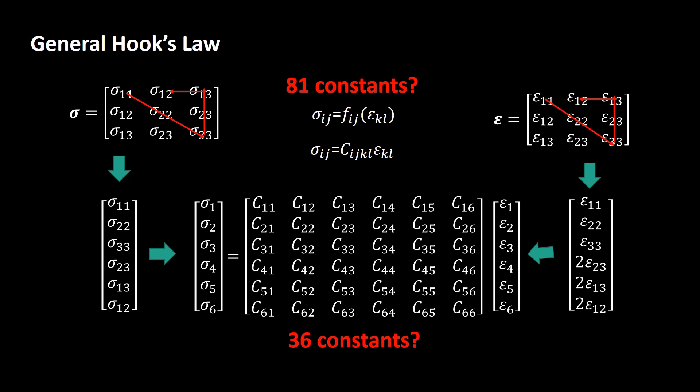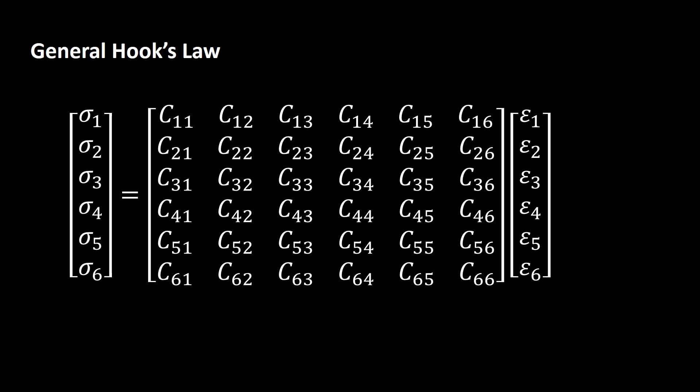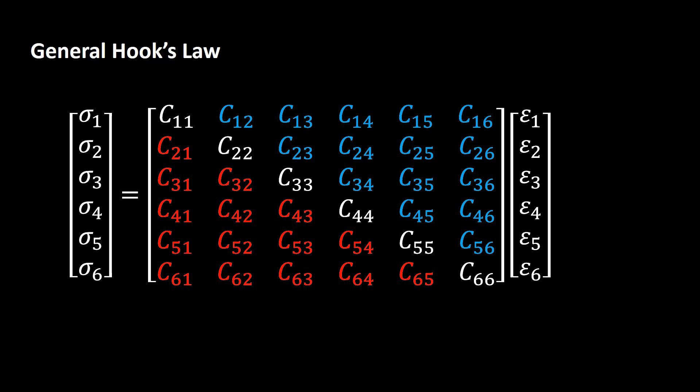But is there any way to further reduce this number? The derivatives of the elastic energy of the material are symmetric with respect to strain; therefore, it can be shown that the stiffness matrix is symmetric. In other words, the blue and red components are the same, and this matrix needs only 21 constants. To analyze the elastic behavior of a material without any kind of symmetry, we need 21 constants.